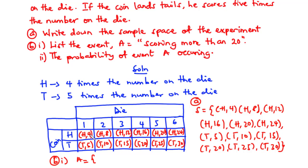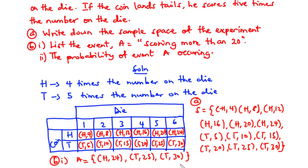For the heads outcomes: 4 is less than 20, 8 is less than 20, 12 is less than 20, 16 is less than 20, 20 is equal to 20, and 24 is more than 20 — so we have heads 24. For the tails outcomes: 5, 10, and 15 are less than 20; 20 is equal to 20; 25 and 30 are more than 20 — so we have tails 25 and tails 30. So event A contains: {heads 24, tails 25, tails 30}.